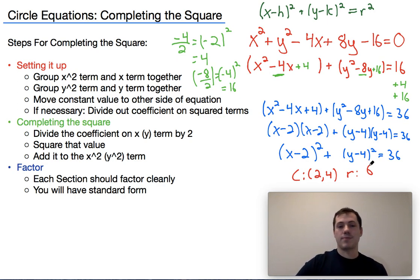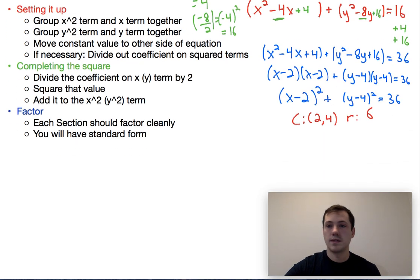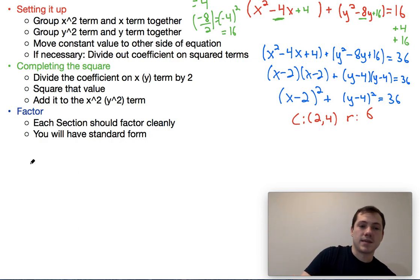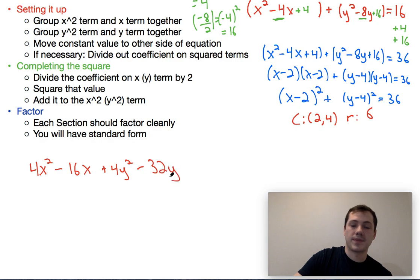Now let's go through a slightly more difficult example where we use this if necessary part. So the sample that I'm going to write here is going to be 4x squared minus 16x plus 4y squared minus 32y minus 20 equals 0.